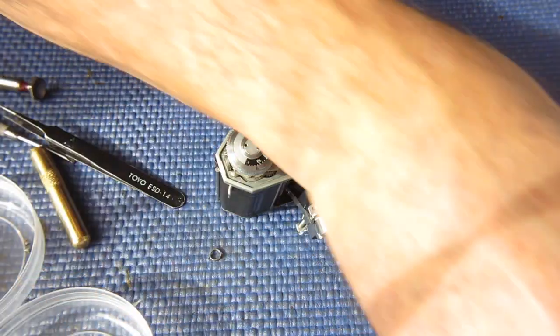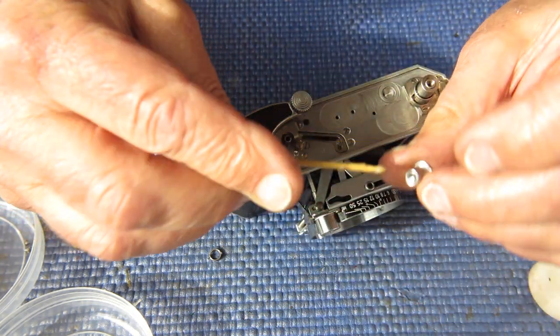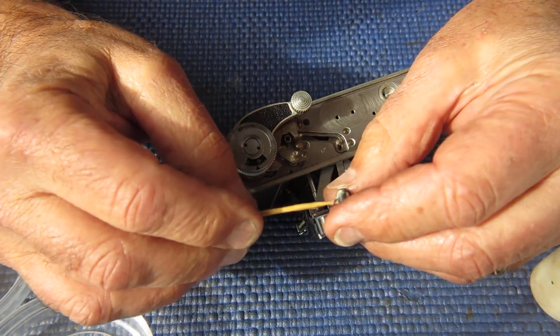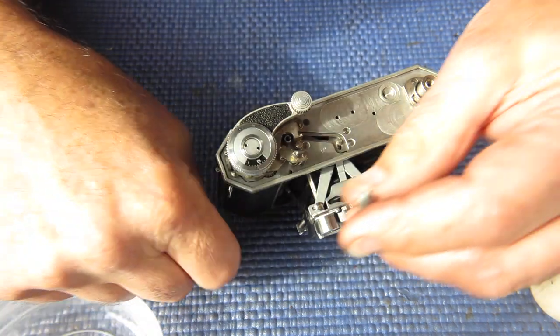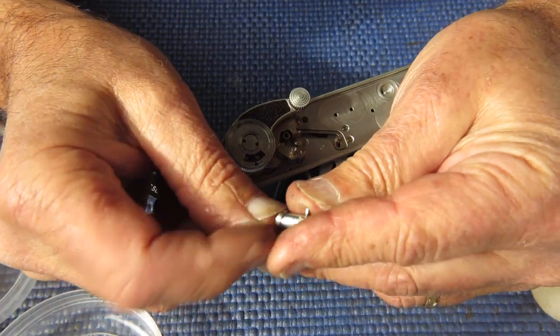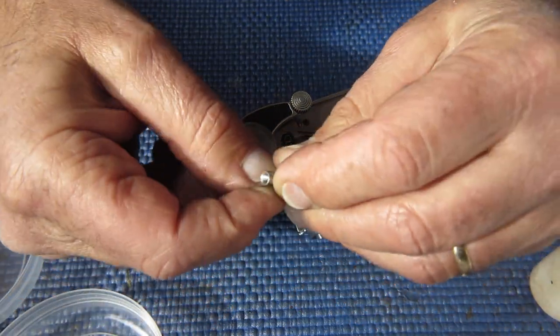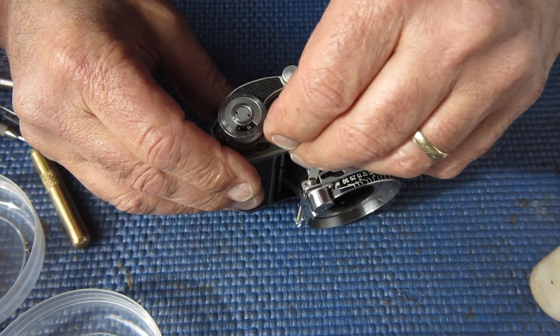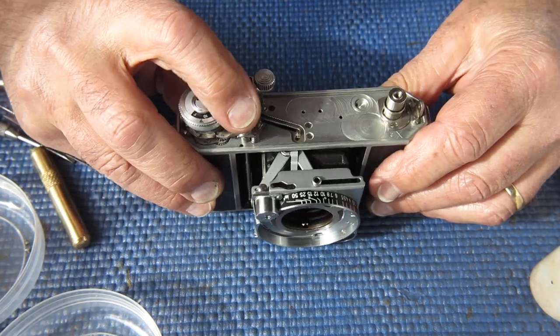So we have the release, shutter release button. And I'm just going to put a little tiny smear of grease on that. So it retains its collar, its spacer collar. That sits on the top. So there we have it.